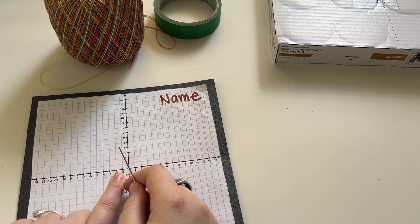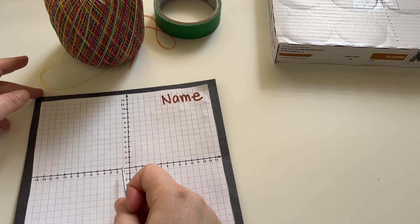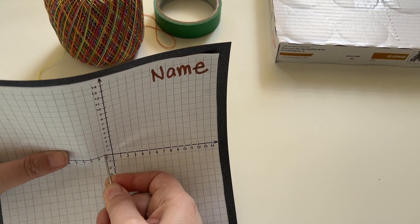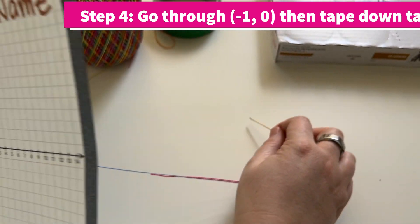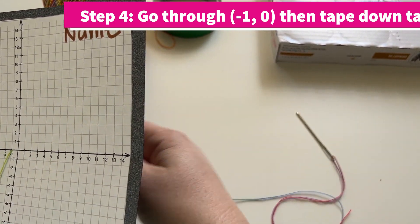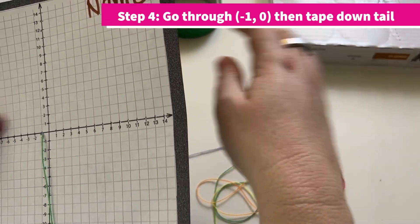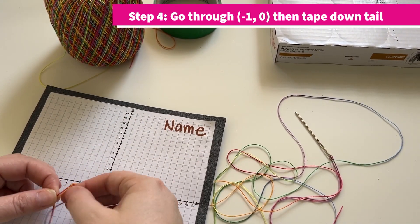We're going to start in our first quadrant. We're going to go through negative one on the x-axis, thread through the paper, and pull it all the way. You want to be careful and go slow because the thread will knot up on you.